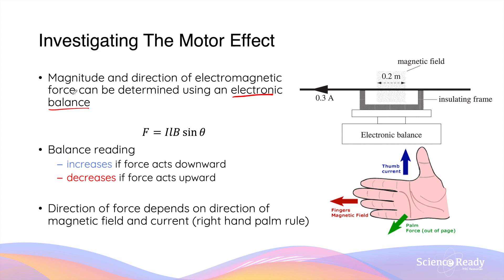The experiment is simple. We can place a current-carrying conductor or wire within an external magnetic field. By putting this conductor onto an electronic balance, we can use a balance reading to determine the forces that are exerted upon the current-carrying conductor.